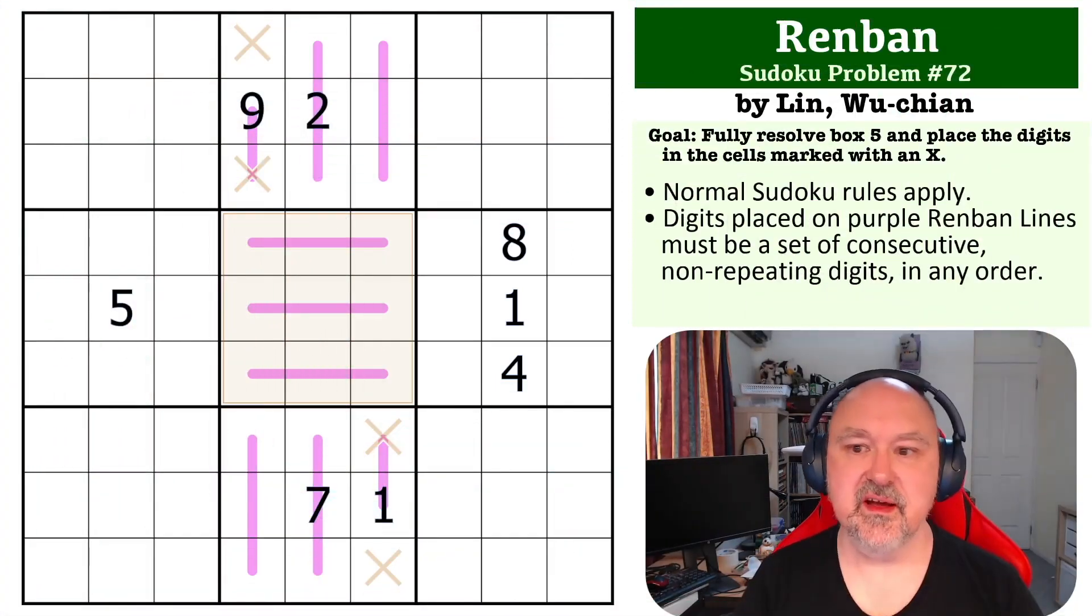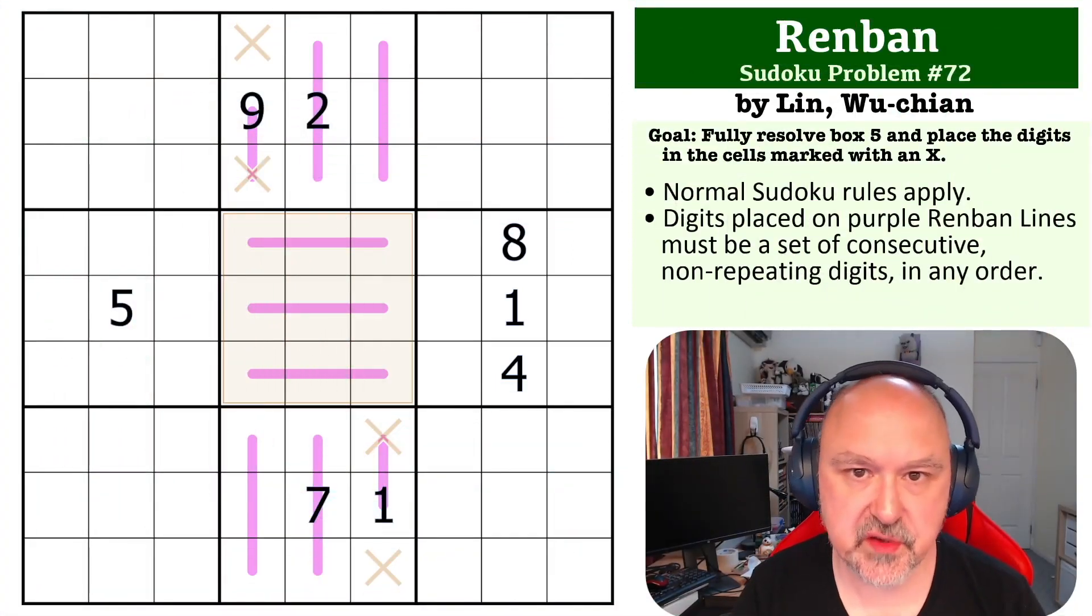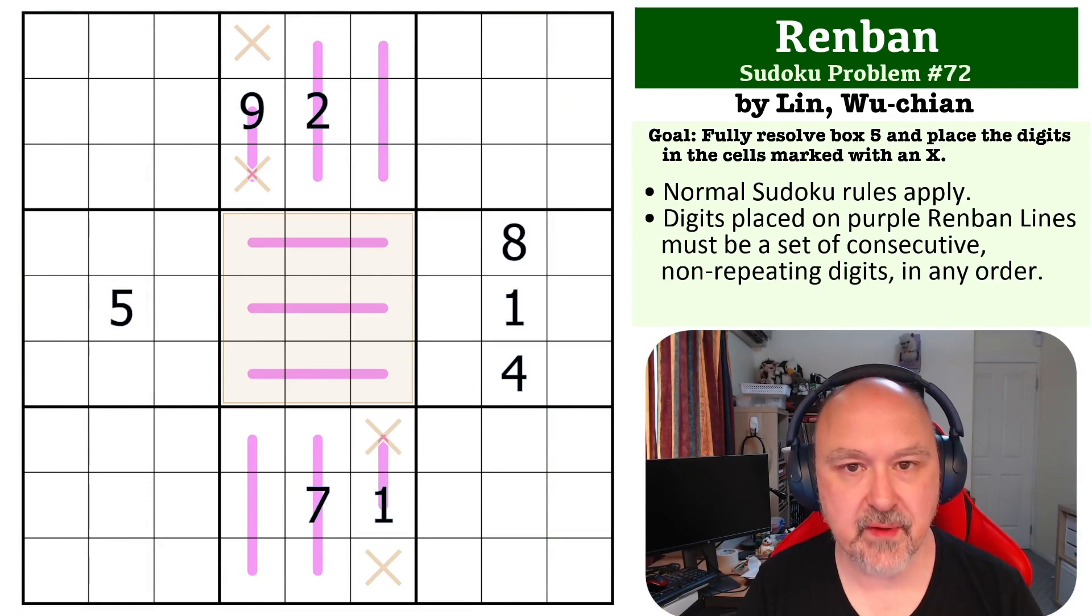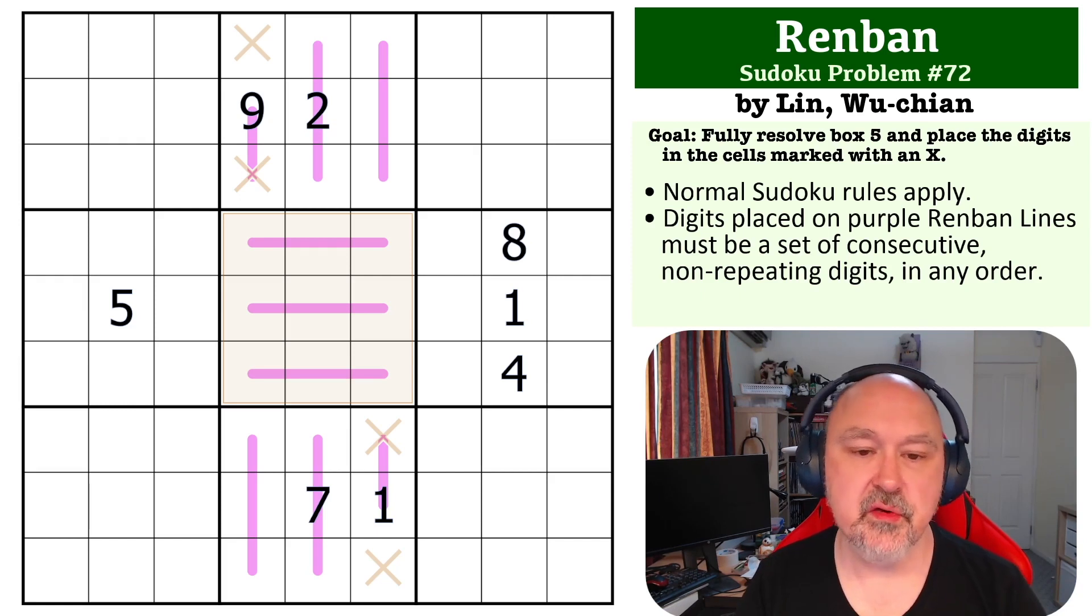Hey everyone, this is Bremster and this is number 72 in the Sudoku Problem Series. This is a Renban problem by Wu Chen Lin. Thank you to Wu Chen for sending in all of the problems. The way Renbans work is they must contain a set of consecutive non-repeating digits in any order.